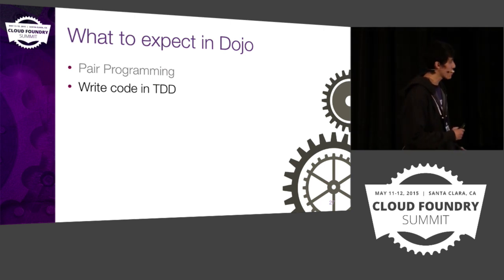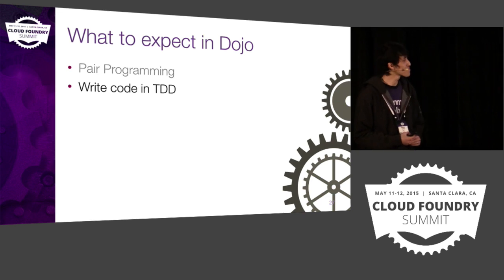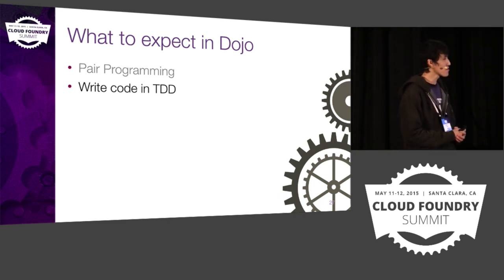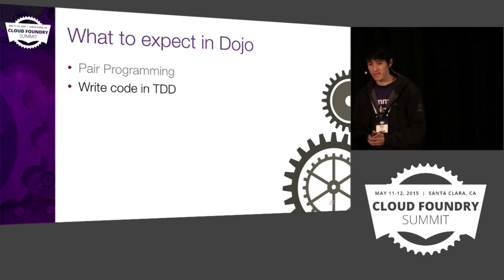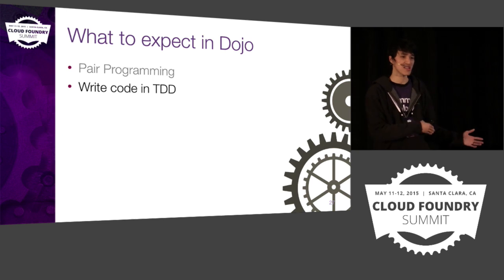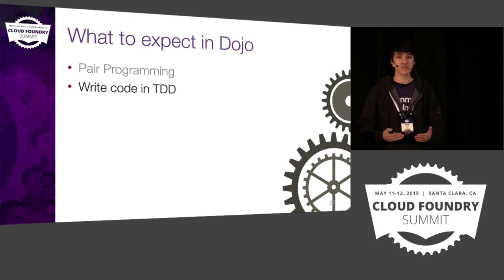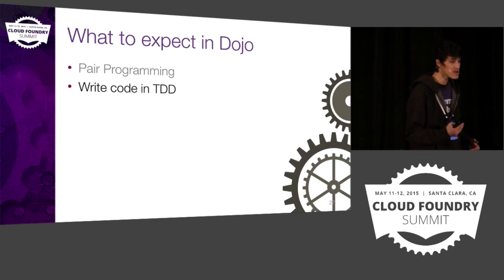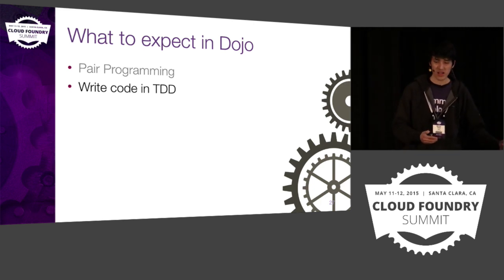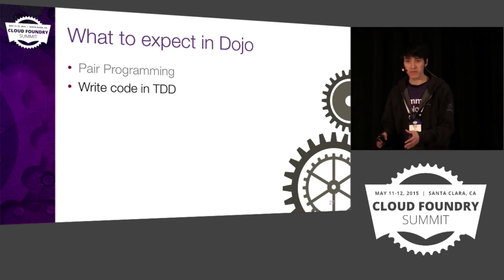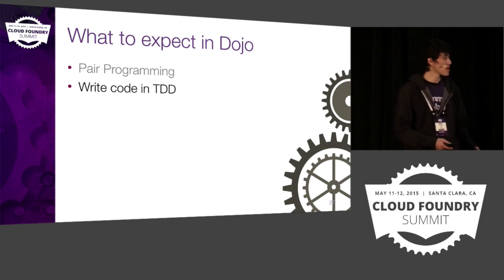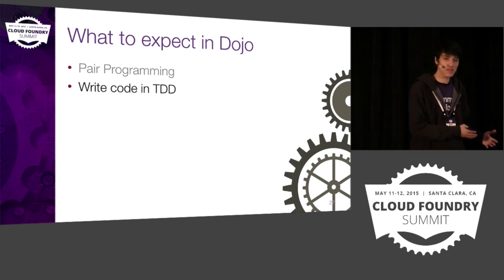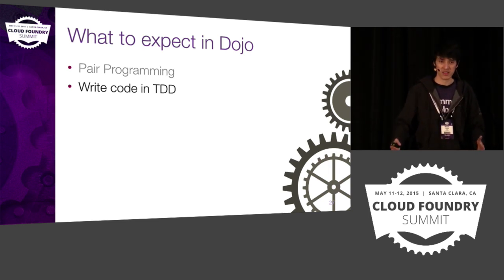The second thing you can expect is to write code in TDD. TDD is really, really hard to learn on your own, and during the Dojo program it's really helpful to have someone fluent in TDD sitting next to you. They constantly force you to think in terms of TDD by asking the right questions: 'How do you want this code to behave, and what kind of test can you write right now to validate that behavior?' If I'm stuck, my pair is there to help me solve the problem and verify everything's correct.